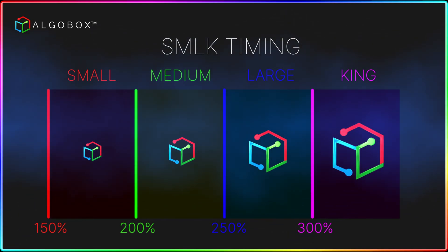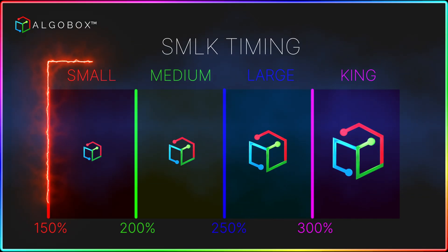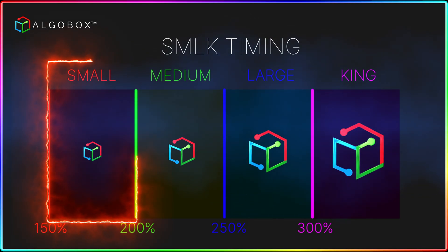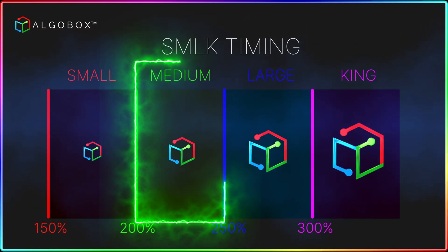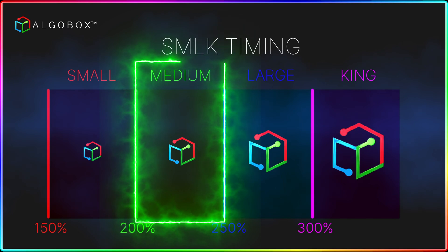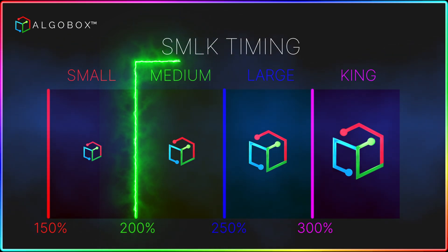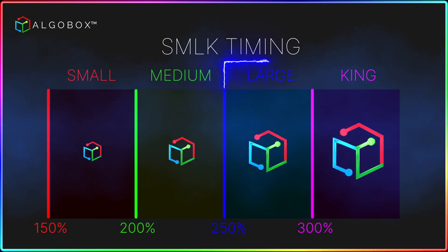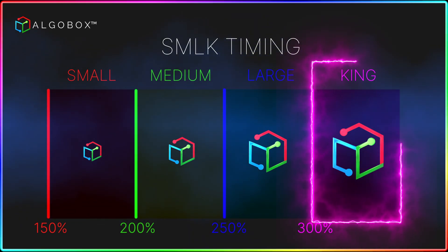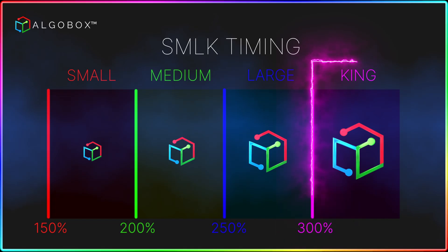Here's how they function. A trade setup within the small SMLK zone often aligns with Target 1. In the medium zone, look for opportunities to reach Target 1 and Target 2. The large SMLK zone typically signals a path toward Target 3. And the king zone? That's where you might aim for Target 3 and even a potential runner.